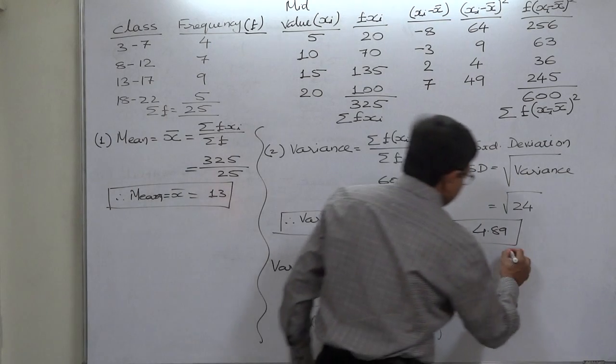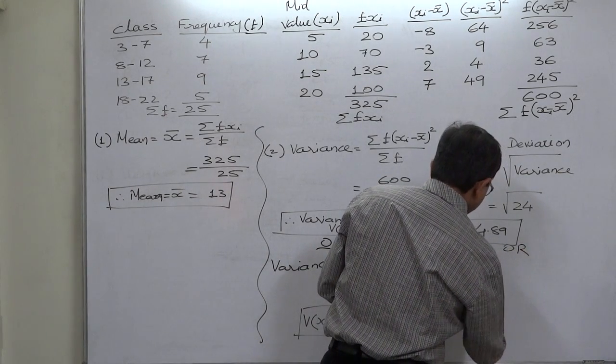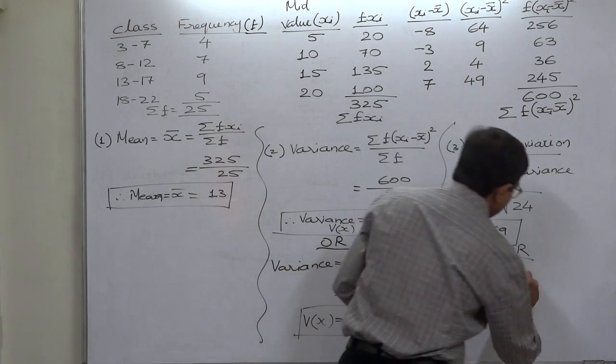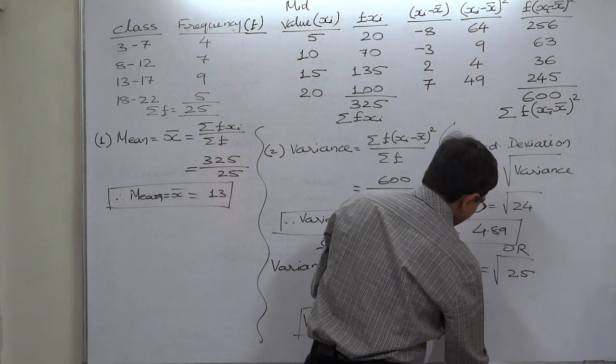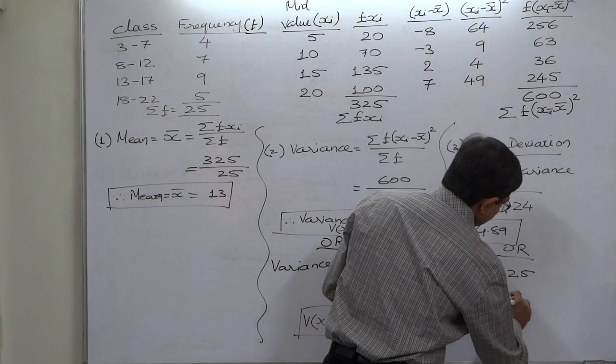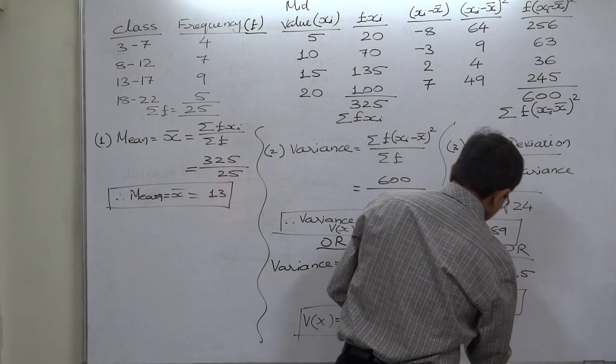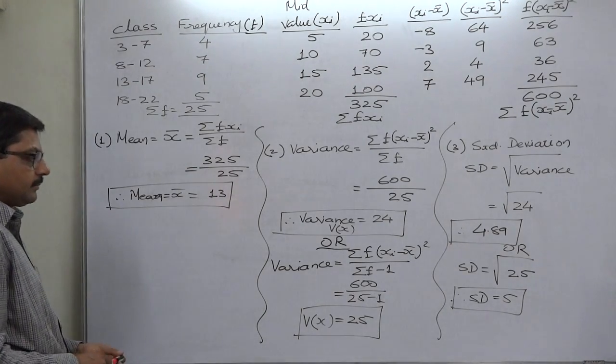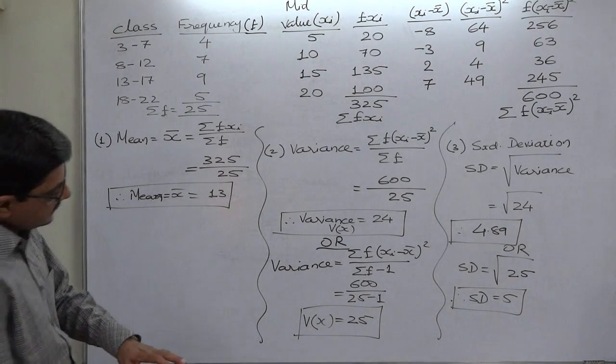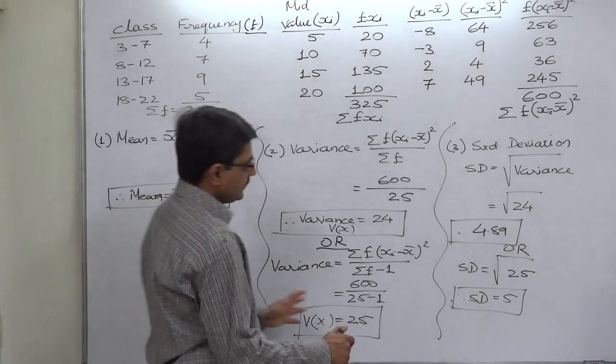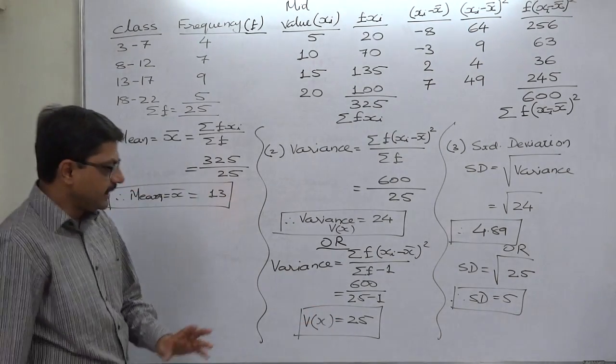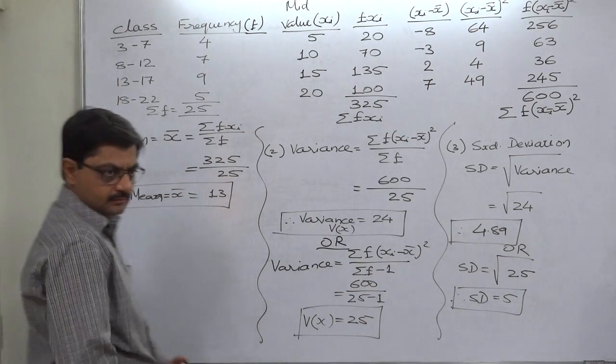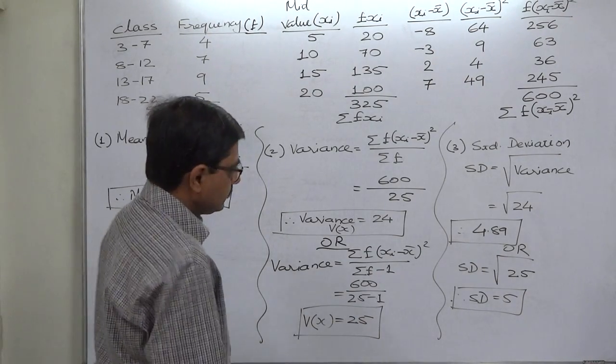And similarly in that case the standard deviation will be the positive square root of 25 instead of 24, so the standard deviation comes to 5. But in case of large sample there is no confusion. In case of large sample we can always take n instead of n minus 1. Thank you.